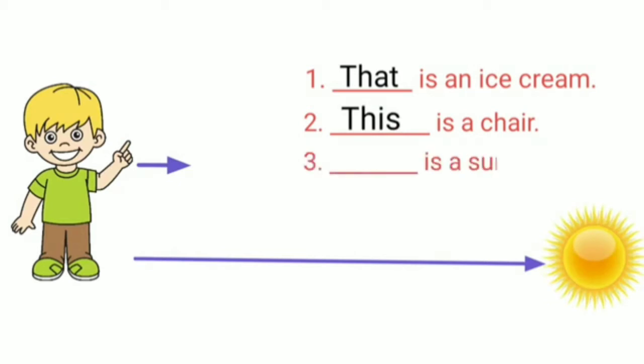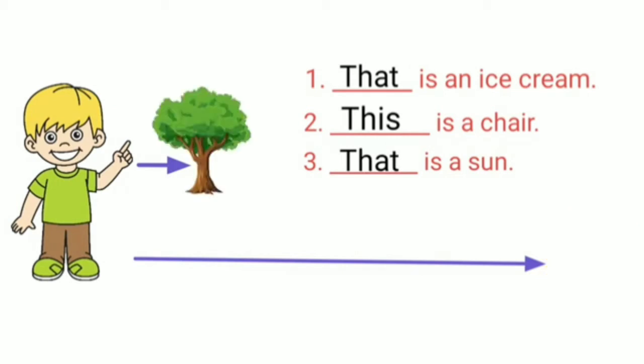Now children, can you see the sun is very far from us, so what do we write? 'That is a sun.' For the fourth one, can you see the tree is near to me, so the sentence is 'This is a tree.'